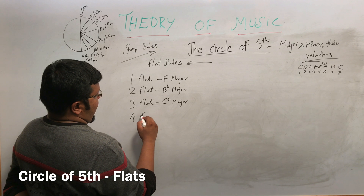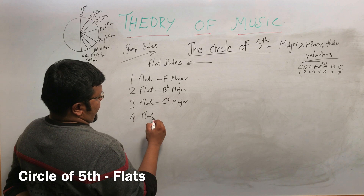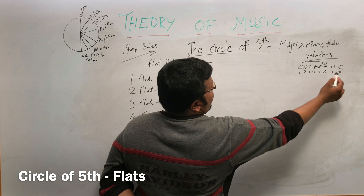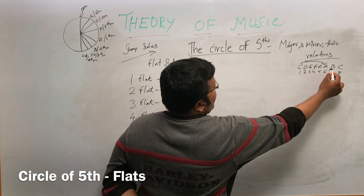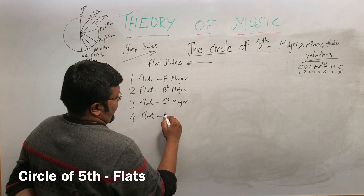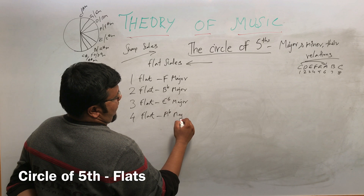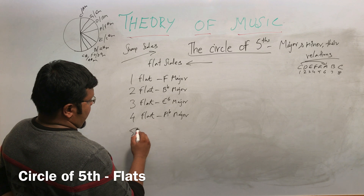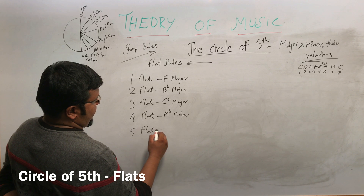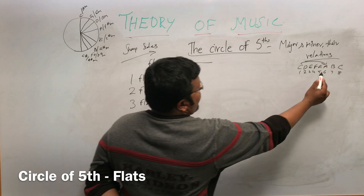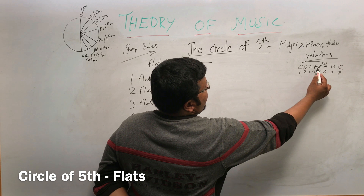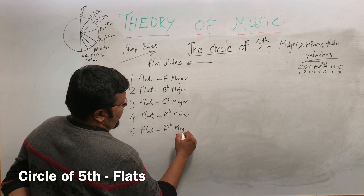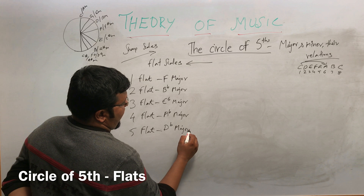Four flats, counting from E-flat: two, three, four, five — that is called A-flat major. And the five-flat scale, counting from A-flat: two, three, four, five — that is called D-flat major.